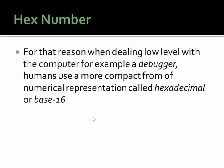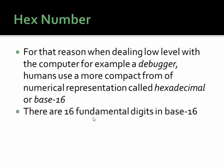So for that reason, when dealing with a low-level system — the computer or debugger — humans use a more compact form of numerical representation called hexadecimal, or hex for short, or base sixteen. There are sixteen fundamental digits in base sixteen as opposed to the two in binary. There's the zero through nine that we're familiar with in decimal, or base ten — the number system we use is called base ten, there are ten digits, also called decimal. And in addition to the digits zero through nine, there's A through F. That actually gives us sixteen different possible combinations for any digit place in base sixteen, which is why it's called base sixteen.